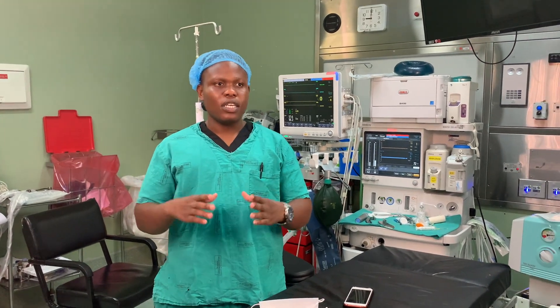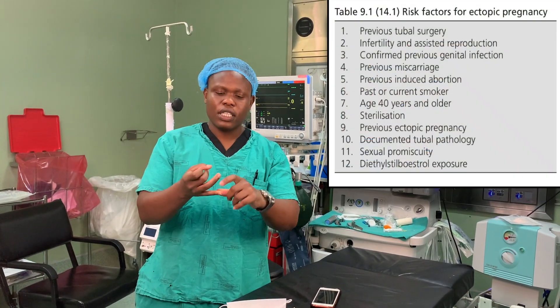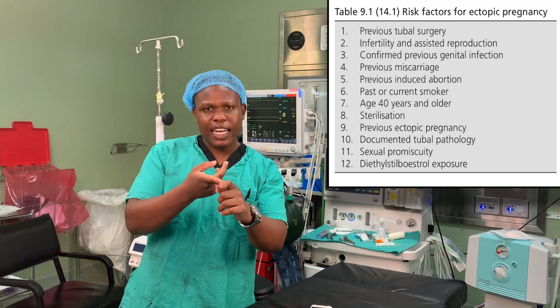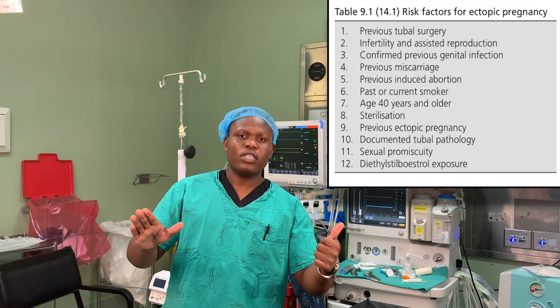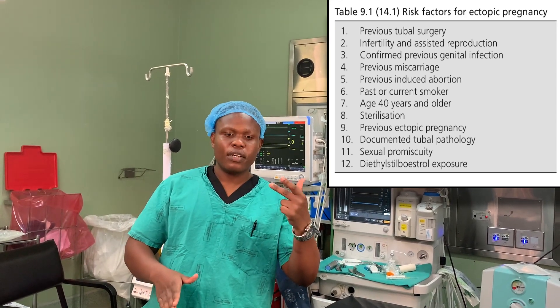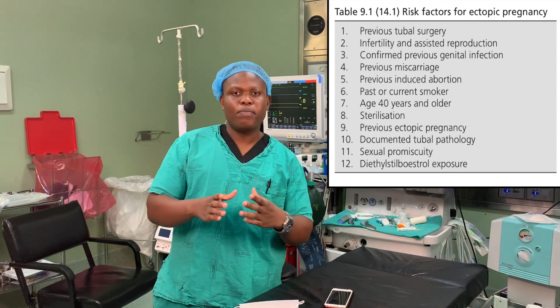What are the risk factors? Why would someone be predisposed to an ectopic pregnancy? First, smoking causes disruption of the tubes. We also have previous tubal surgery, previous ectopic pregnancy, failed sterilization, age around 40, infertility, and documented genital infection — there are about eight or nine risk factors in total.